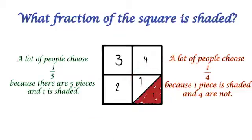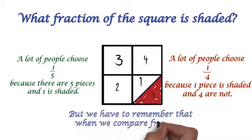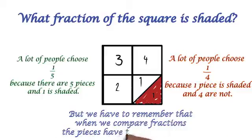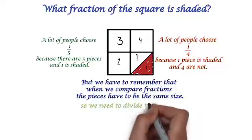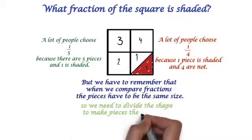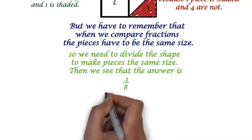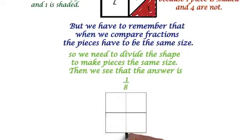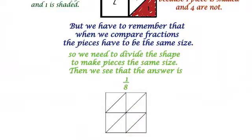But we have to remember that when we compare fractions the pieces have to be the same size. So with our shape there we need to divide the shape to make all the pieces the same size, and that helps us see that the answer is one eighth because to make them all the same size we make eight pieces and then we can see that one is shaded out of eight.